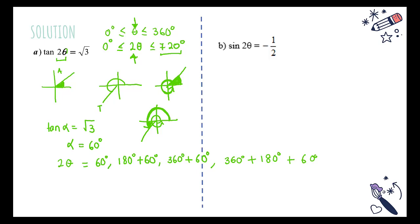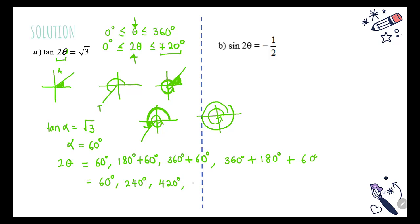So this gives us our fourth angle. We stop here because the next angle would exceed 720° — two whole turns gives 720°, so we have exactly four answers. Simplifying: 2θ = 60°, 240°, 420°, and 600°.